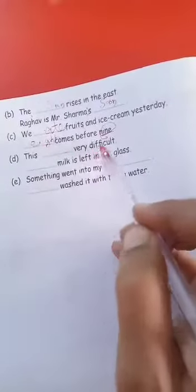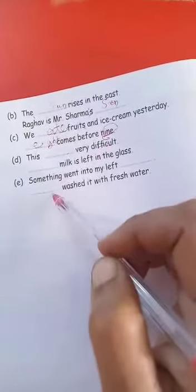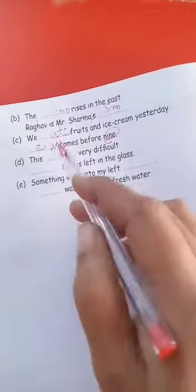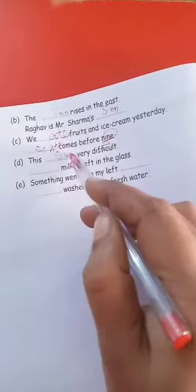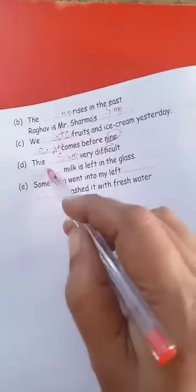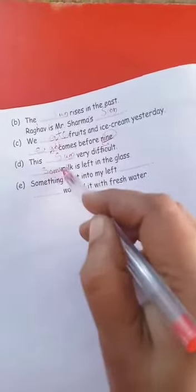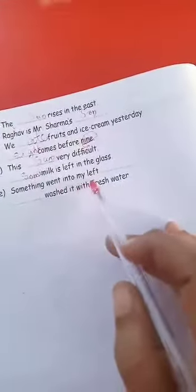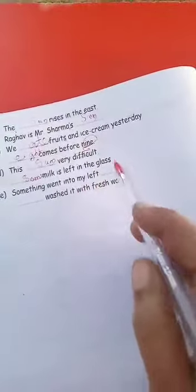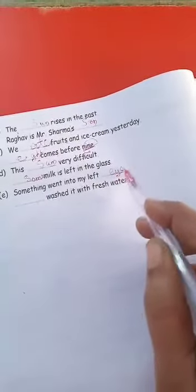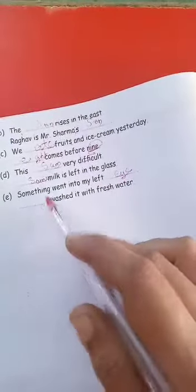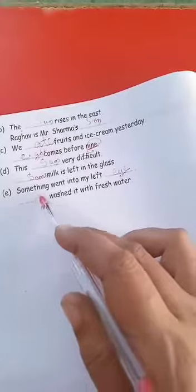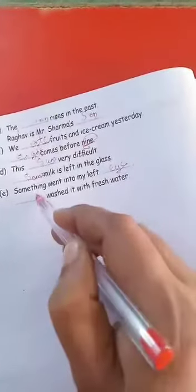'This dash very difficult' — answer is 'some'. 'Some milk is left in the glass.' 'Something went into my left eye. I washed it with fresh water.' These are examples using homophones. This is called homophones.